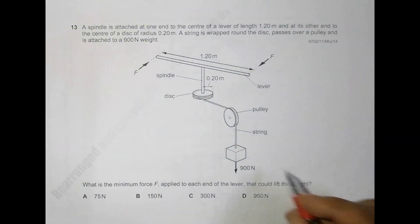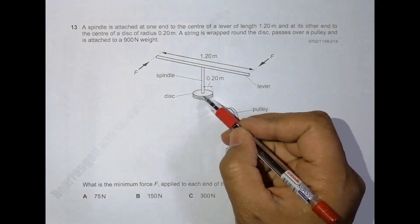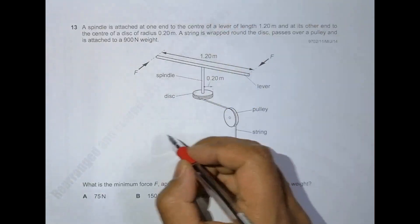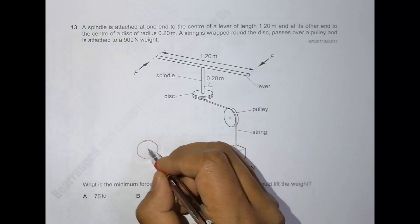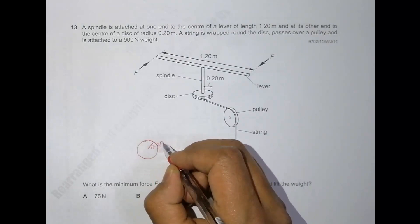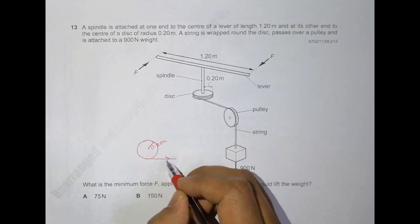If I look at this from above, it looks like a circular disk with radius equal to 0.2 meters. The string is going from this end like this.